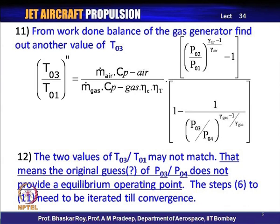If the T03/T01 from mass flow balance and from work balance do not match, you need to go back to the work balance step and iterate through all steps until the two values match — that is, until T03/T01 from work balance and from mass balance are identical. Only then can we say we have reached the equilibrium operating point of the gas generator components, compressor and turbine.